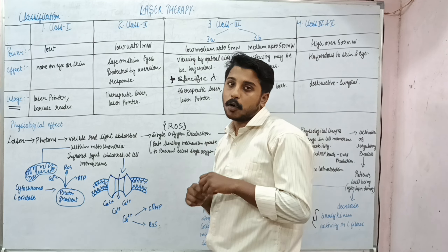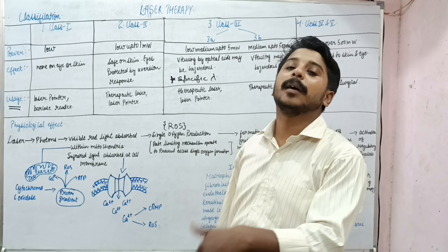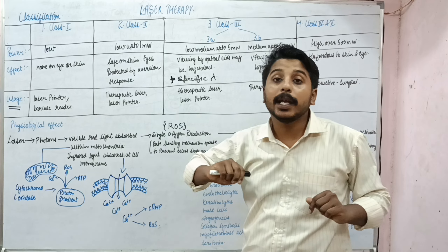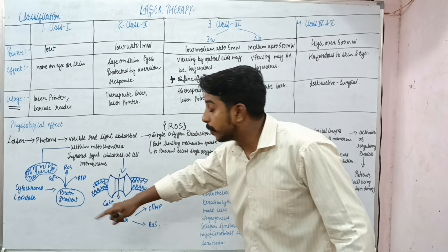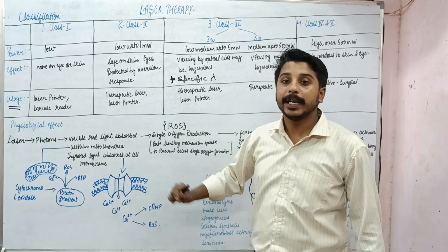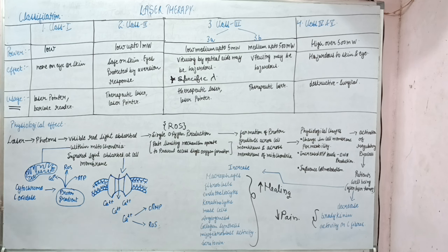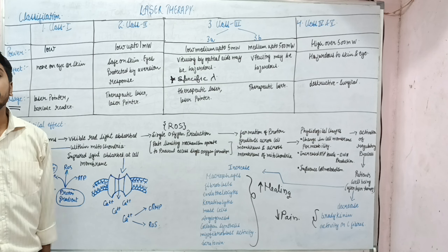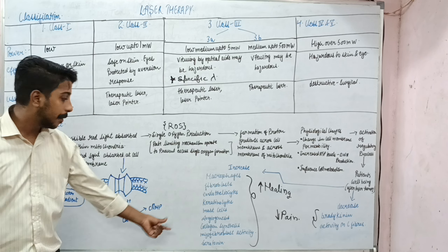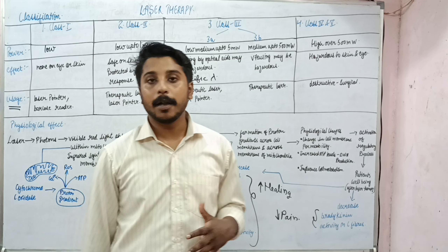In simple words: when laser radiation falls on our skin surface, some amount is reflected, refracted, scattered, and absorbed. The red light near the visible spectrum is absorbed by mitochondria — cytochrome c oxidase forms a proton gradient, increasing ATP, ROS, and calcium. Near-IR light is absorbed at the cell membrane level, increasing calcium influx, cyclic AMP, and reactive oxygen species. These factors stimulate macrophages, fibroblasts, and blood vessel formation, while reducing C-fiber activity — thereby reducing pain.